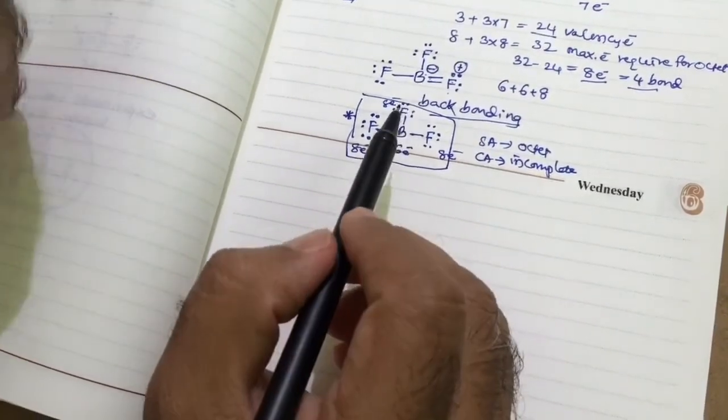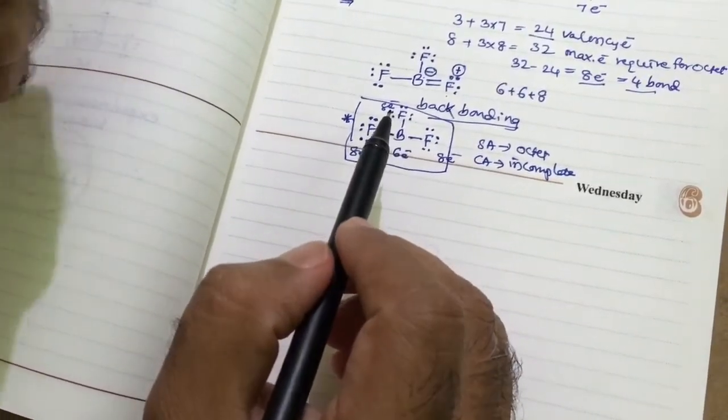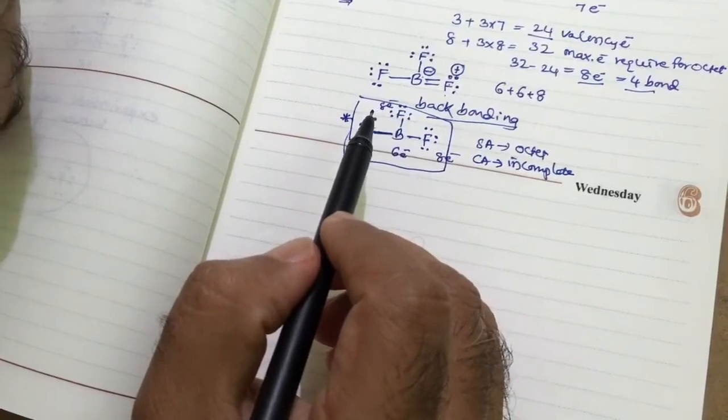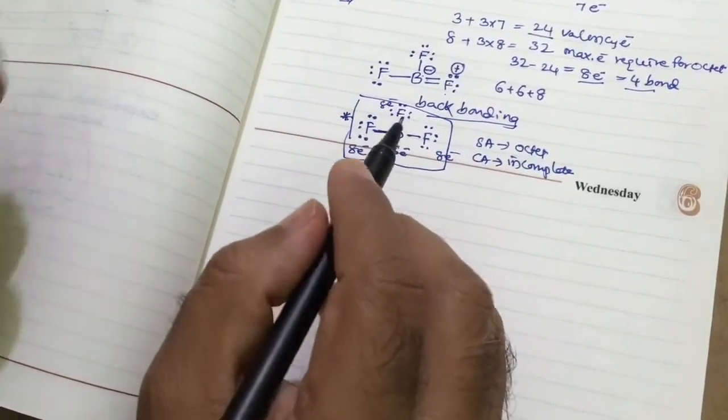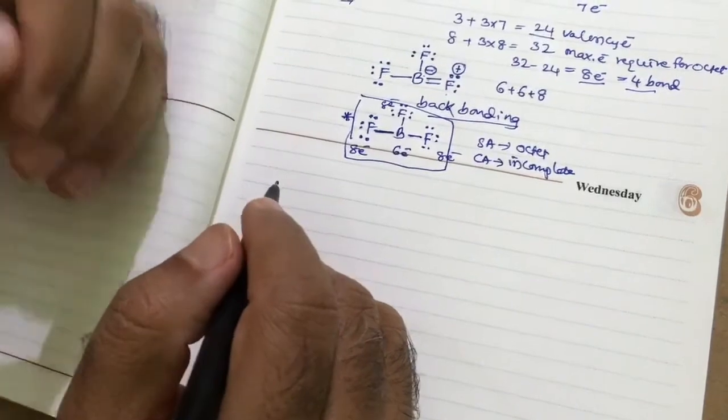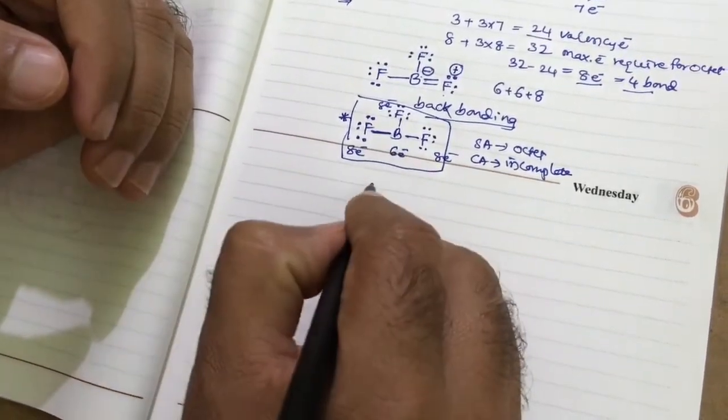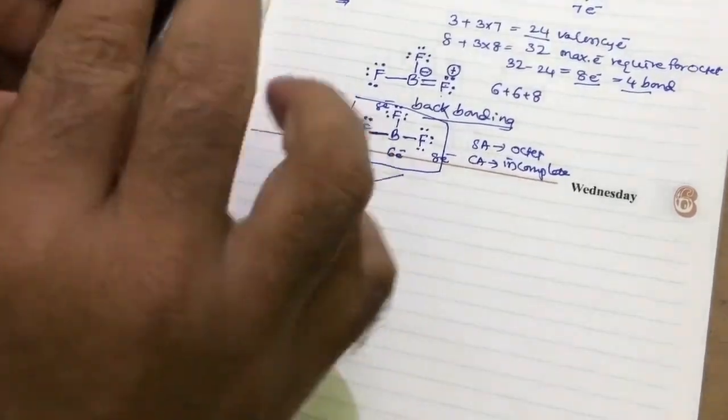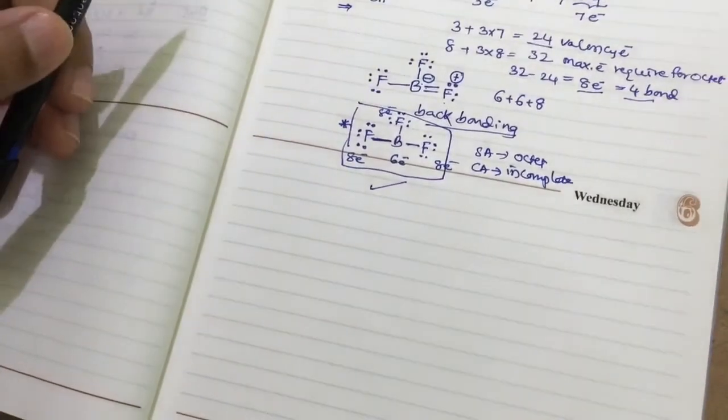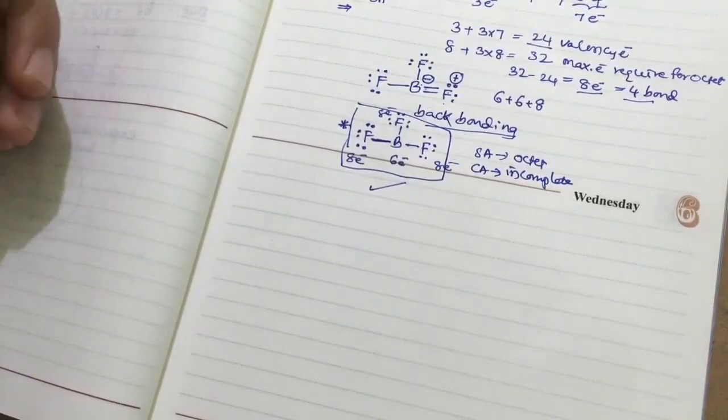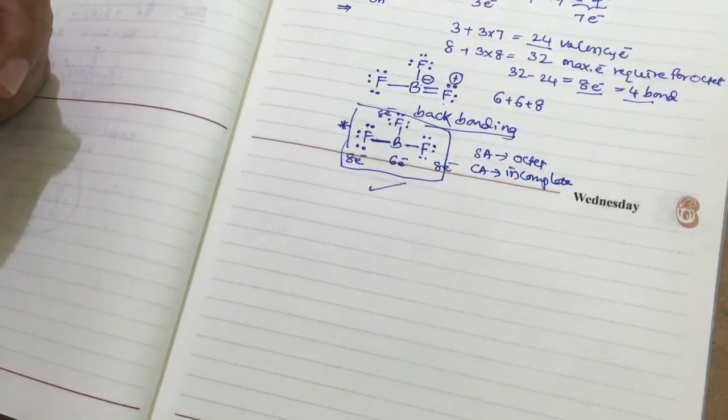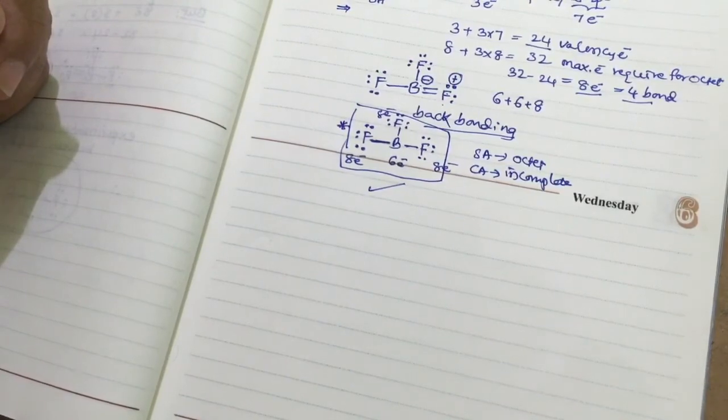And the negative charge is on the more electronegative atom, positive charge is on the less electronegative atom. That is one of the acceptable, in the resonance structures or Lewis structure. Therefore, this is an acceptable Lewis structure. Thank you very much. I hope you understand the concept, why we are writing BF3 with three bonds, other than four bonds. Thank you very much.